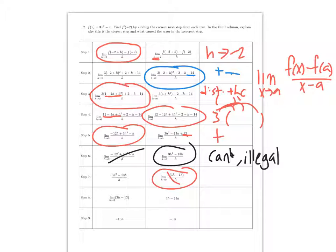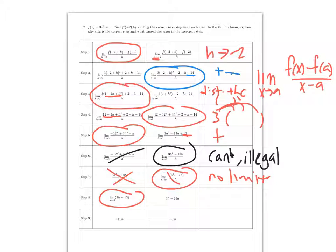On this side they just got rid of the limit for some reason. So we've got 3h minus 13 — but we still need the limit there, because we haven't plugged it in yet. Then we plug in 0 and we get minus 13 as our answer.